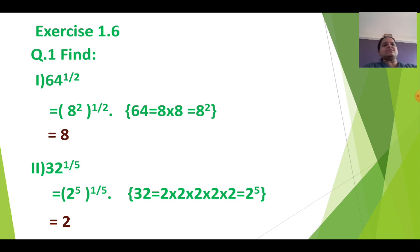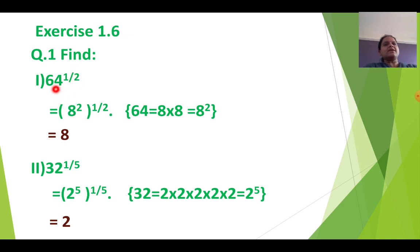See the first sum: 64 raised to 1 by 2. So here, see the denominator — the denominator is 2. So let us write 64 in the power of 2, so that the 2 and 2 will get cancelled. Here I can write 64 as 8 square.